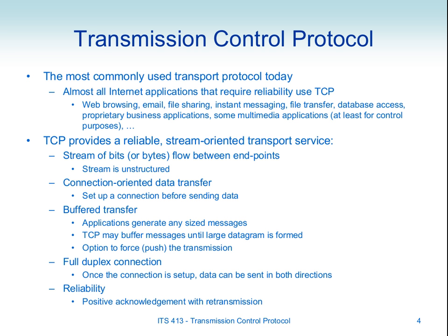The byte stream model impacts how we use sequence numbers. We give sequence numbers to the data we send — first piece sequence number 1, second piece sequence number 2, and so on. In TCP, those sequence numbers count bytes: if I send 1,000 bytes, the first byte is sequence number 1, the 1,000th byte is sequence number 1,000, and the next byte is 1,001. The sequence number of a segment is the sequence number of the first byte of data in that segment.